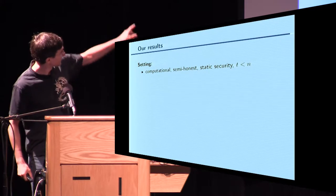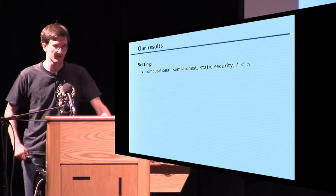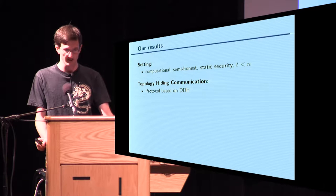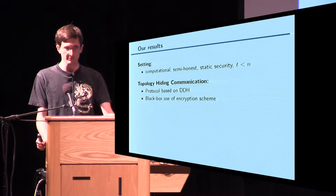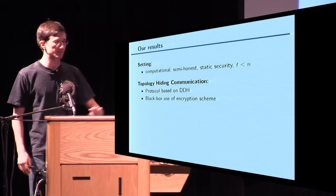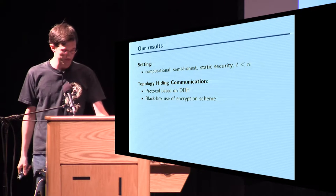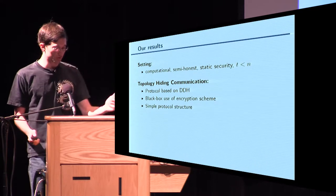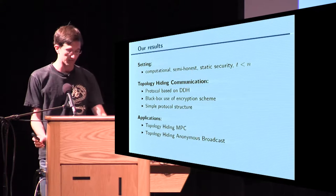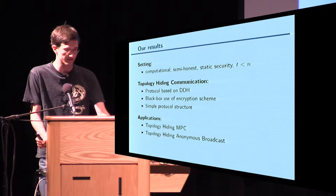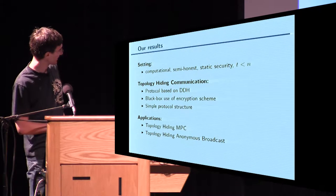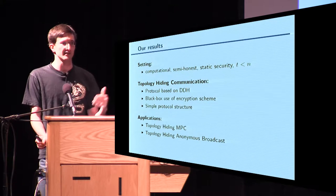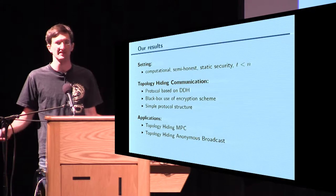Our results are in the same setting — computationally bounded semi-honest adversaries. In this work we present a protocol which is based only on the DDH assumption. We only use black-box encryption — no MPC in MPC — just plain encryption and sending around messages. This leads to a simple protocol structure. On top of such a protocol, we also describe applications: the classical application is MPC, as introduced in the TCC result. We especially focus on topology-hiding anonymous broadcasts — a broadcast where you not only hide the sender but also hide any information about the network, achieving complete anonymous communication.